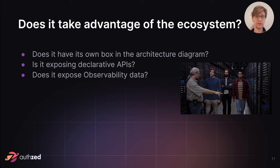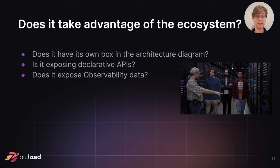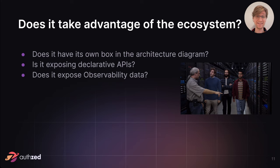I also wanted to highlight observability data — making sure you're playing well with how people have operationalized the cloud and how they're inspecting whether they're getting value from it, because they're using a bunch of tooling in the observability space. If your software is not producing JSON-formatted structured logs, OpenTelemetry tracing, Prometheus time series metrics, and doesn't have Grafana dashboards people can reuse, it will impede the success people get from your software. They'll either have to rebuild those things themselves or pick another solution that is actually inspectable.